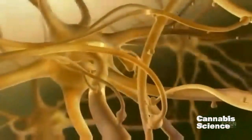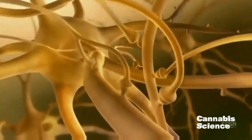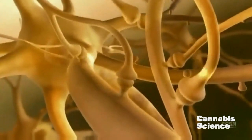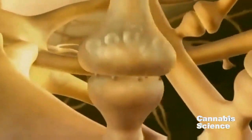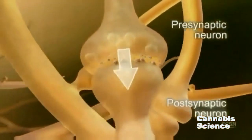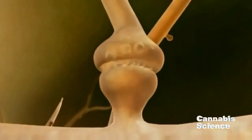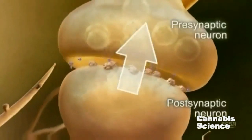Within the brain, CB1 receptors are among the most abundant G-protein coupled receptors. However, in contrast to classical signaling where information travels from pre- to post-synaptic neurons, the ECS uses retrograde signaling — information travels from post- to pre-synaptic neuron.